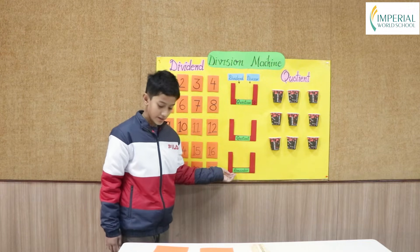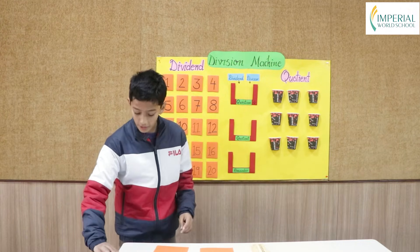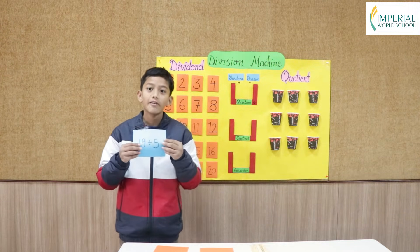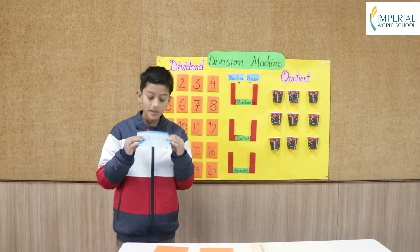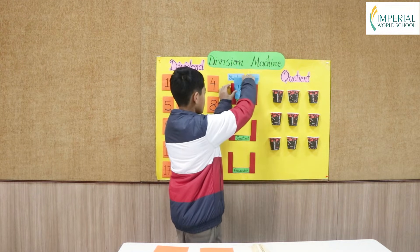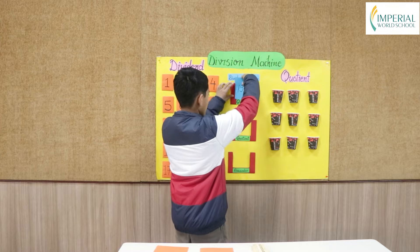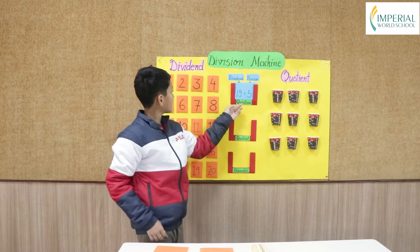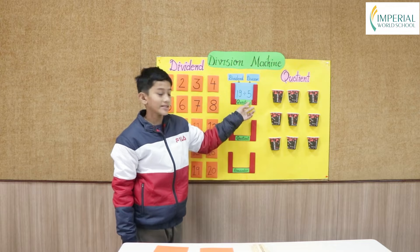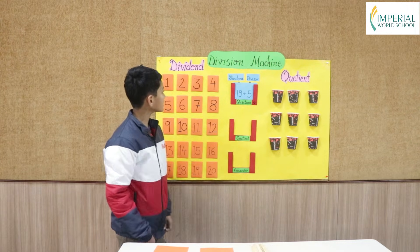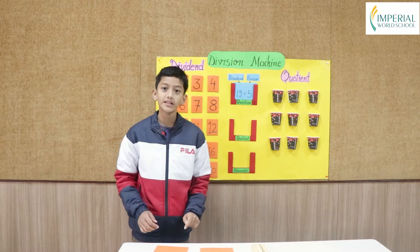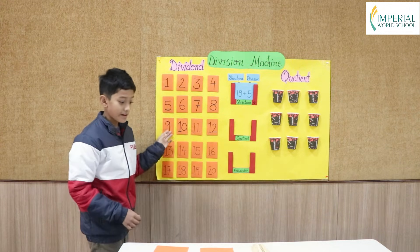And this is the remainder. So I've got a problem and the problem is 19 divided by 5. So 19 is the dividend and 5 is the divisor. As 19 is the dividend, I need 19 popsicle sticks to keep them in the dividend pouches.